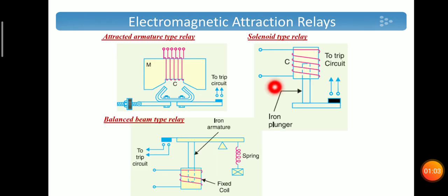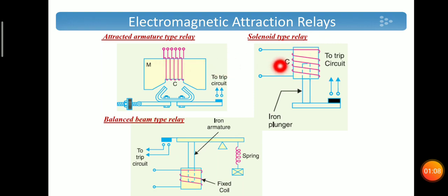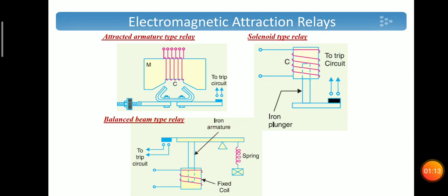The first type is electromagnetic attraction relays. There are three types: attracted armature type, solenoid type, and balanced beam type.